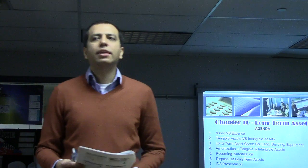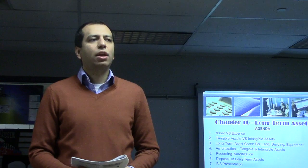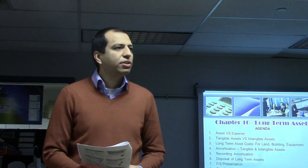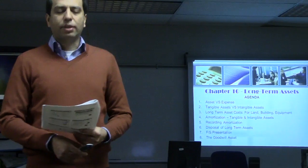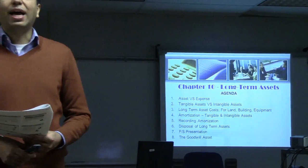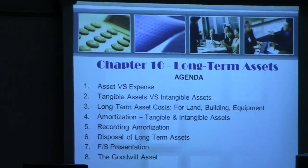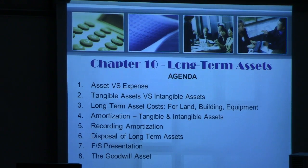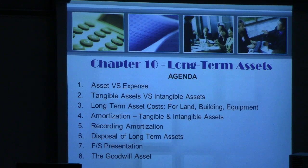We're going to start Chapter 10. Chapter 10 is a long chapter, and we're going to cover quite a lot of concepts. The agenda will start off by talking about the differences between an asset and an expense, then tangible versus intangible assets. We will also talk about long-term asset costs for land, buildings, and equipment, and amortization. Amortization is key for both tangible and intangible assets.